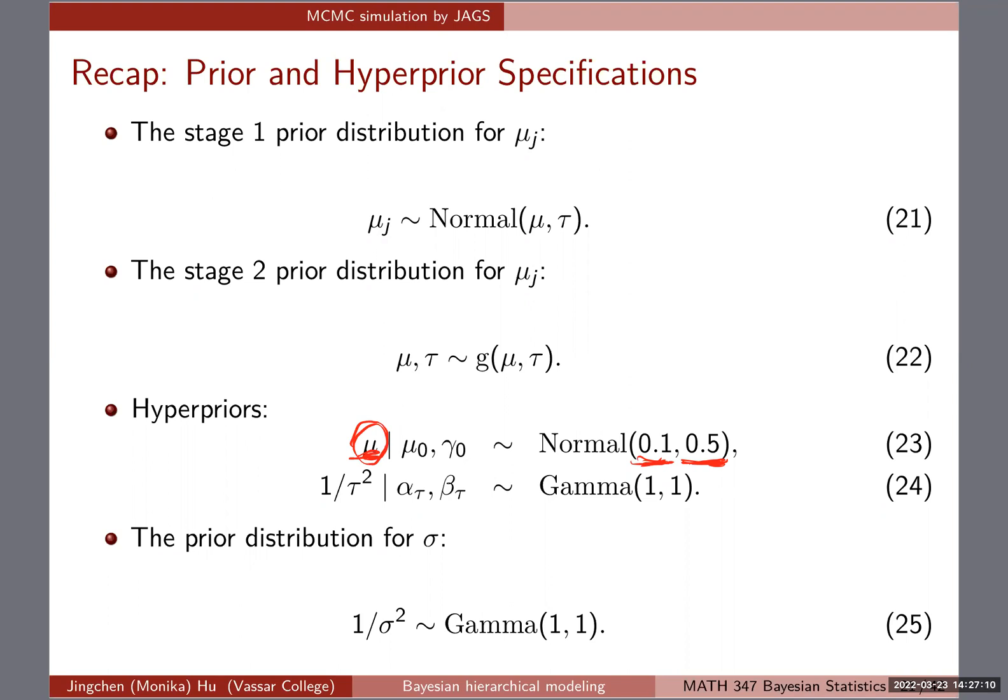If you believe otherwise, you can reduce that 0.5 a little bit, but nevertheless, this is the starting point. So all this 0.1, 0.5 and those ones, we will have to pass that into the JAGS code later as well.